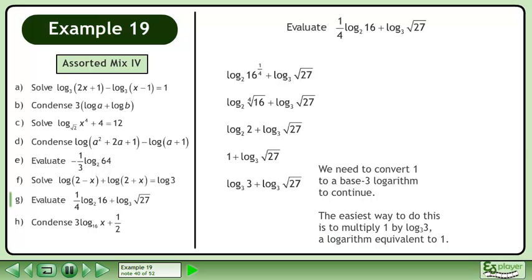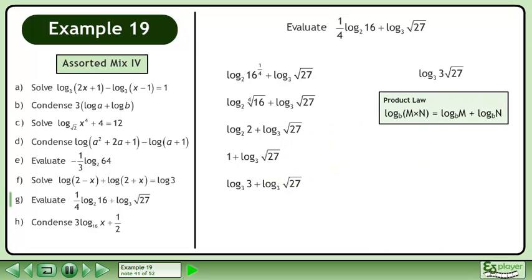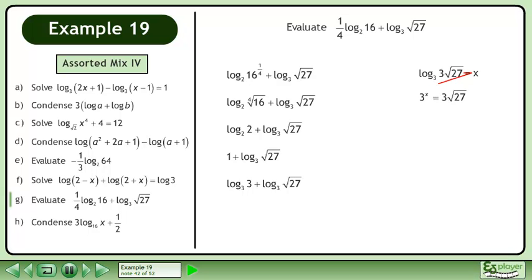We need to convert 1 to a base 3 logarithm to continue. The easiest way to do this is to multiply 1 by the base 3 logarithm of 3, a logarithm equivalent to 1. Condense using the product law in reverse. Convert to exponential form using the 7 rule. 27 is 3 cubed. Write the radical as an exponent. Multiply the powers by adding the exponents. The answer is x equals 5 over 2.